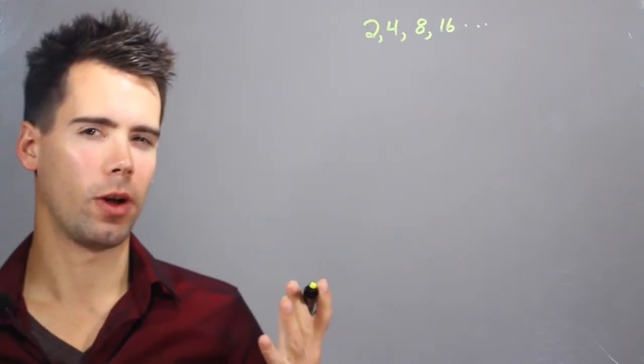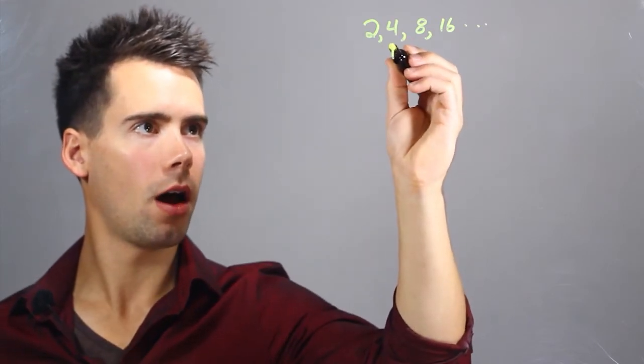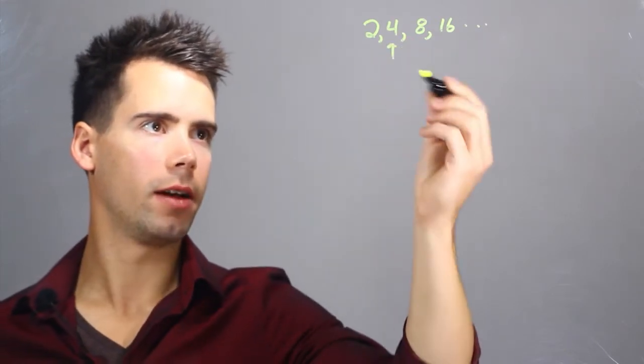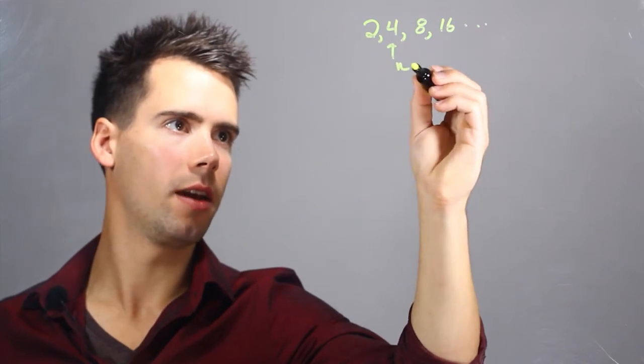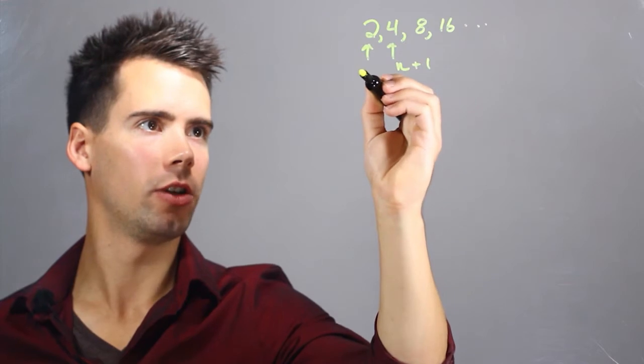You can find the X or the ratio of the multiplication amount by taking a higher level term at somewhere position n plus 1 and dividing it by a term at position n.